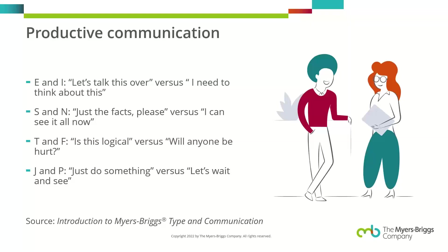It comes down to how we flex to meet the needs of the people we're communicating with. Instead of the golden rule — treat people how you want to be treated — consider the platinum rule: communicate with people the way they need to be communicated with. For Sensing and Intuition: people who prefer Sensing need just the facts, while those who prefer Intuition, like me, need the big picture first. If you overwhelm someone with an Intuition preference with lots of details and specifics, they may not retain them — start big picture and let them ask for detail if needed.